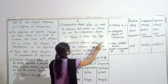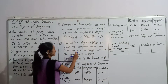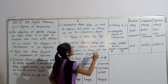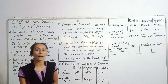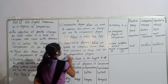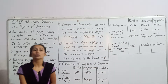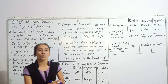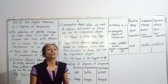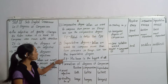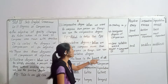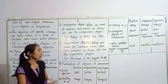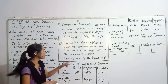Now the third degree is superlative degree. Superlative degree is used when we want to compare more than two persons or things — all three or more. We use the superlative degree. For example: 'This house is the biggest of all.' That means the house is the biggest among all.